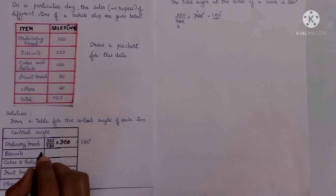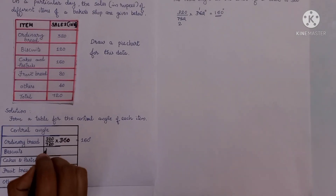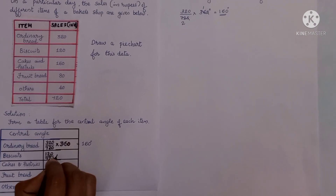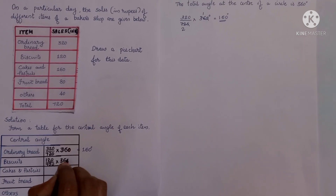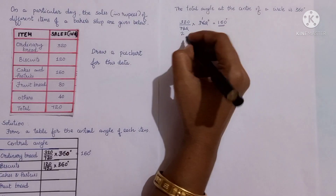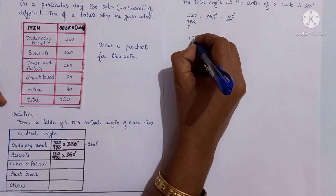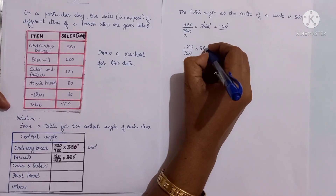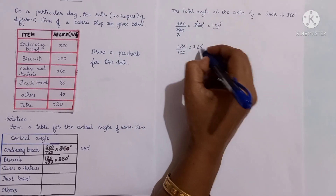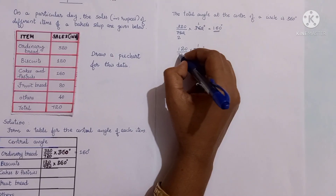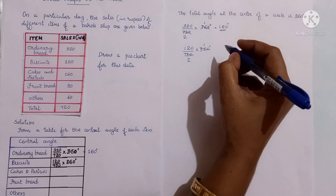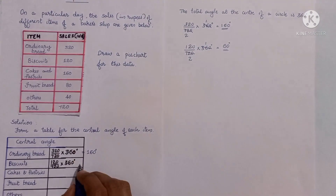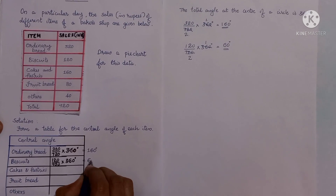Similarly, we find the central angle for each item. For biscuits: 120 divided by 720 into 360 degrees. We cancel 360 and 720 — 360 goes once, 720 divided by 360 is 2, and 120 divided by 2 equals 60 degrees. So the sector angle representing biscuits is 60 degrees.